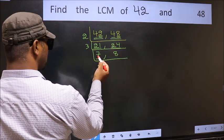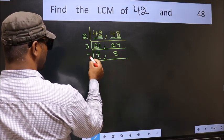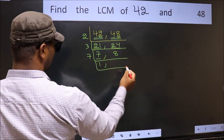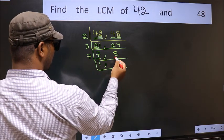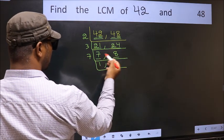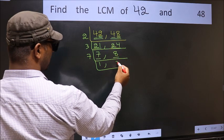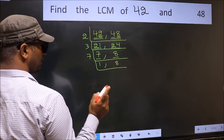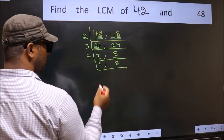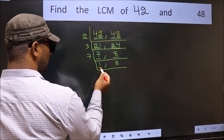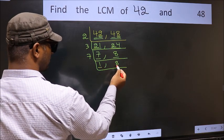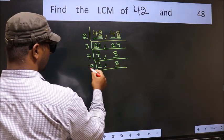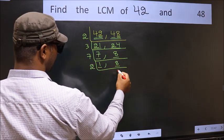Now here we have 7. 7 is a prime number, so 7 — 1 seven is 7. The other number is 8, which is not divisible by 7, so we write it down as it is. Now we got 1 here.